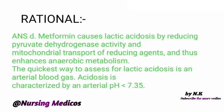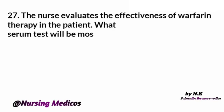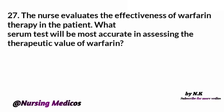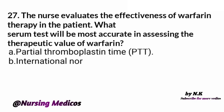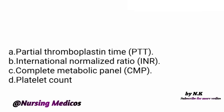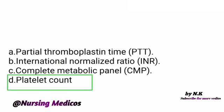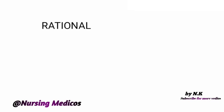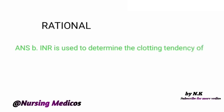The quickest way to assess for lactic acidosis is an arterial blood gas — acidosis is below pH 7.35. Question 27: The nurse evaluates the effectiveness of warfarin therapy in a patient. What serum test will be most accurate? Options: A) aPTT, B) INR, C) Complete metabolic panel, D) Platelet count. Answer is D, platelet count. The rationale is INR is used to determine the clotting tendency of a patient's blood.